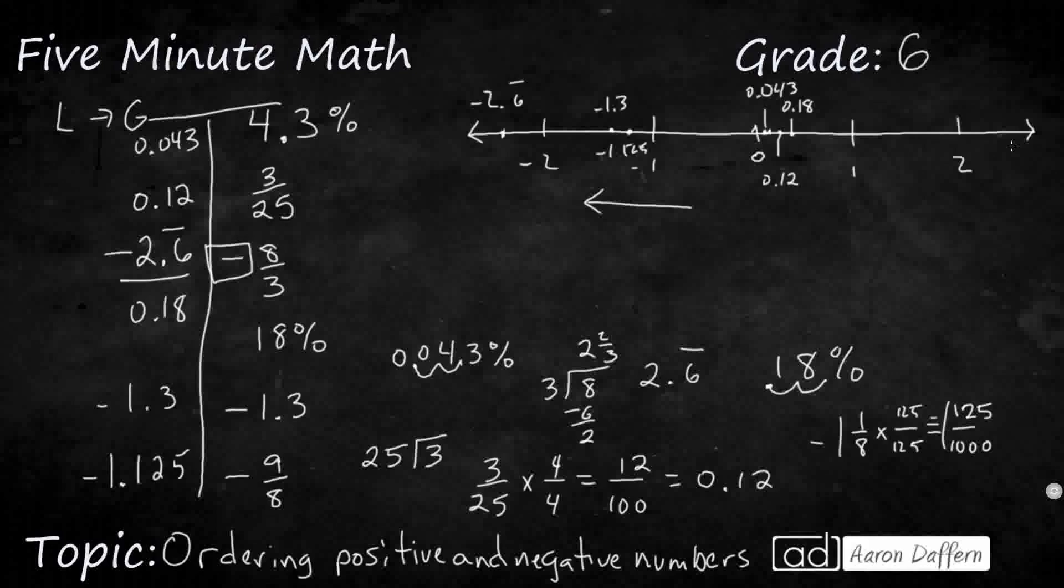Okay, so moving from left to right, least to greatest, we have negative 2 and 6 tenths repeating. Then we have, in succession, negative 1 and 3 tenths. And then negative 1 and 125 thousandths. All the negatives are going to be the smallest. Then we get into our positive numbers, and they're all stacked up together. Our first is going to be 43 thousandths. Next we have 12 hundredths. And then finally our largest number is actually 18 hundredths.